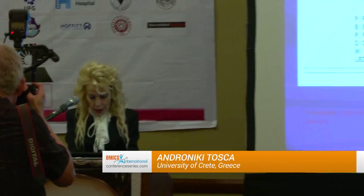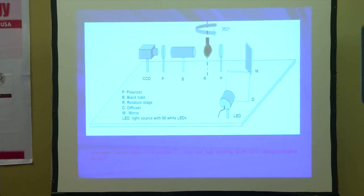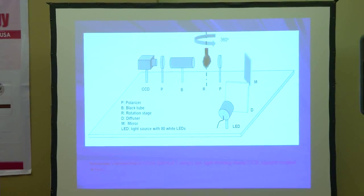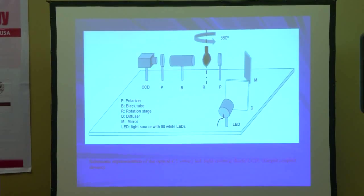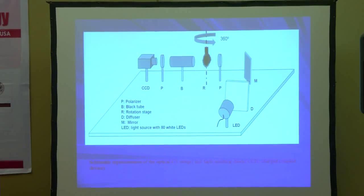Here are the laser emitting diodes — 80 laser emitting diodes. We have then a diffuser, then a mirror. The light comes to a perpendicular polarizer and goes to the rotation stage where the sample is held, giving a rotation of about 6.6 degrees. It then passes through a black tube to another polarizer which is parallel, in front of the charge-coupled device which is cooled. And then we have our images.